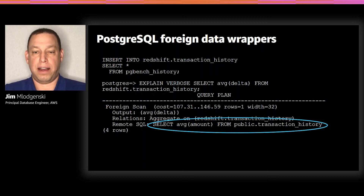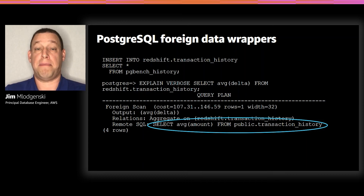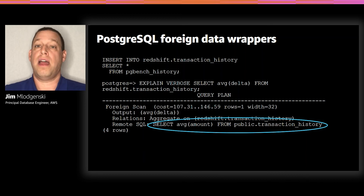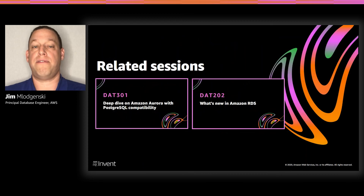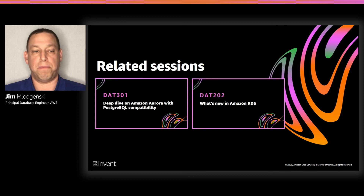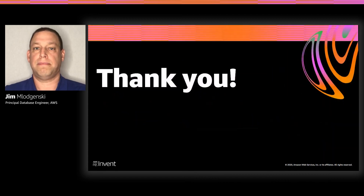Hopefully we dug into a few key pieces around performance and other features inside Postgres — around upgrades and how you move data around to make your whole application and architecture more scalable. If you want to find out more, there are related sessions where you can do a deep dive on Aurora Postgres or RDS in general. Hopefully you learned something about Postgres performance and a deep dive into RDS Postgres. Thank you.